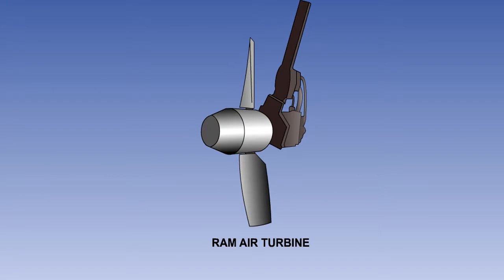The output of the ram air turbine will normally be used as a backup solely to operate the primary flight controls and brakes.